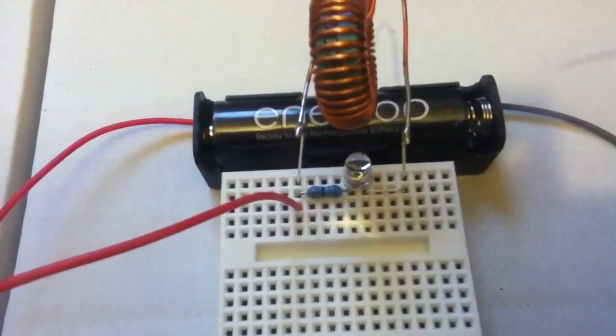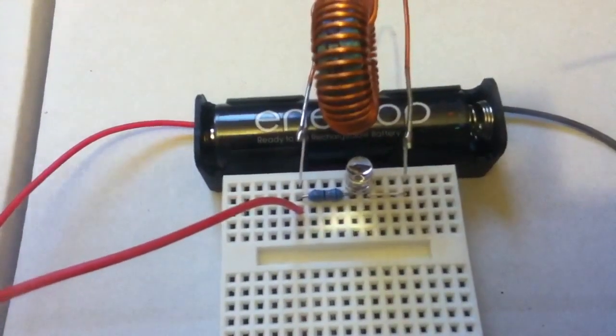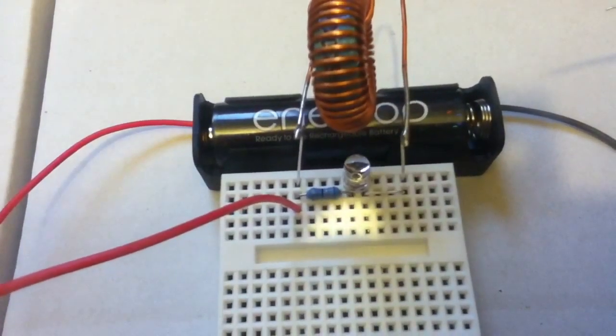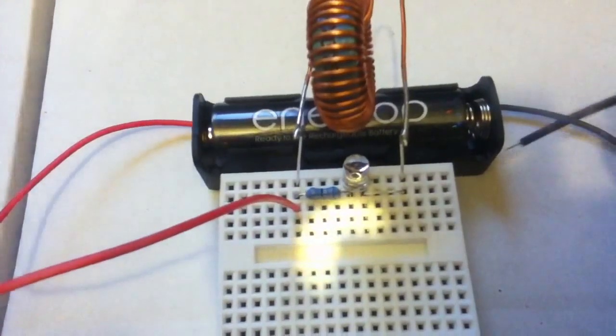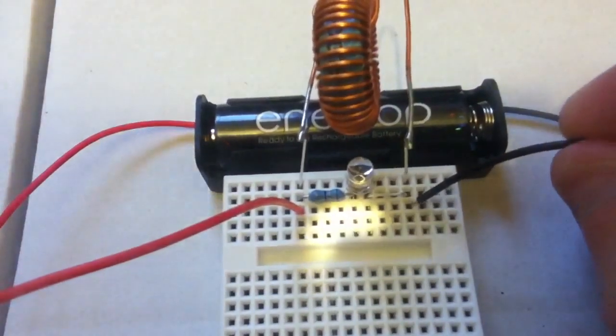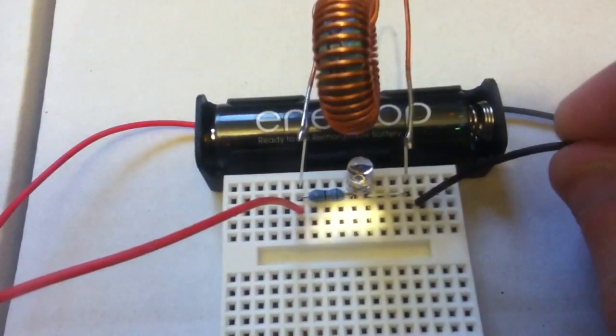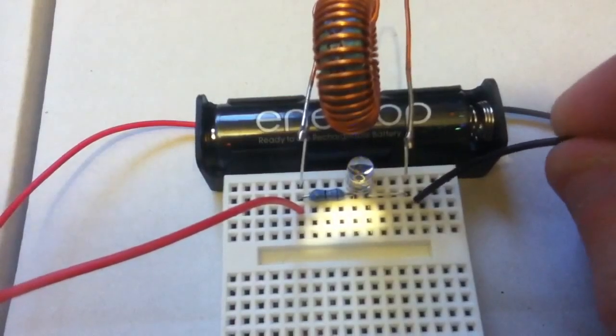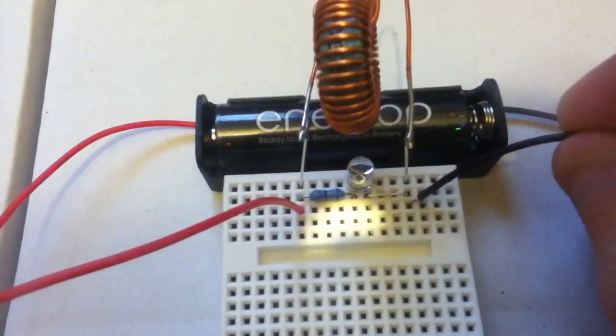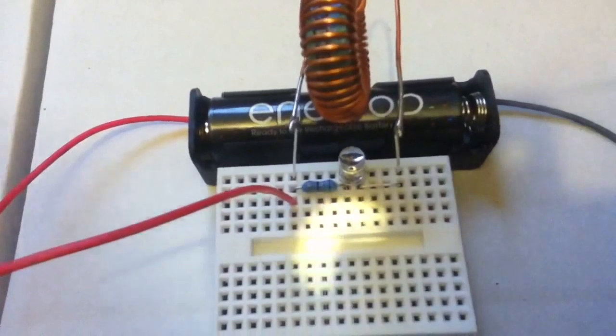So there's an inductor, it's enamel copper wire wound around a ferrite core. And now if I put the negative here, you can probably just see tiny bursts of light coming from the LED.